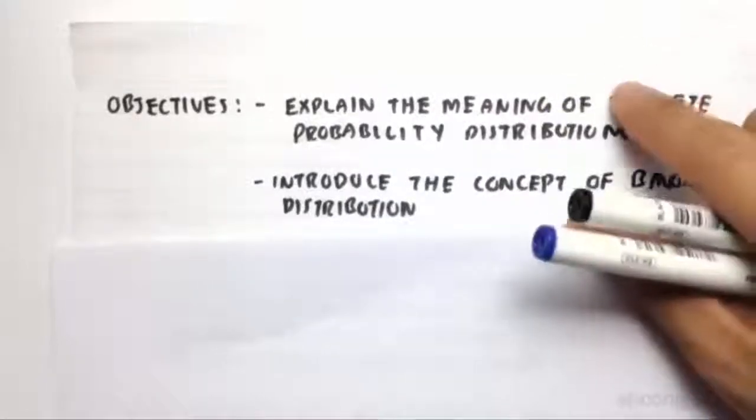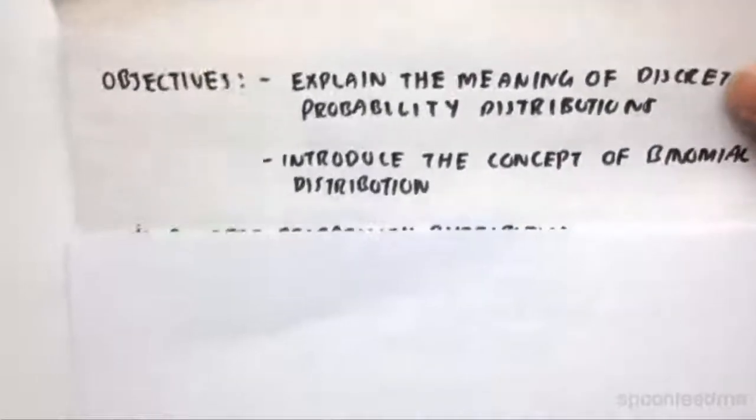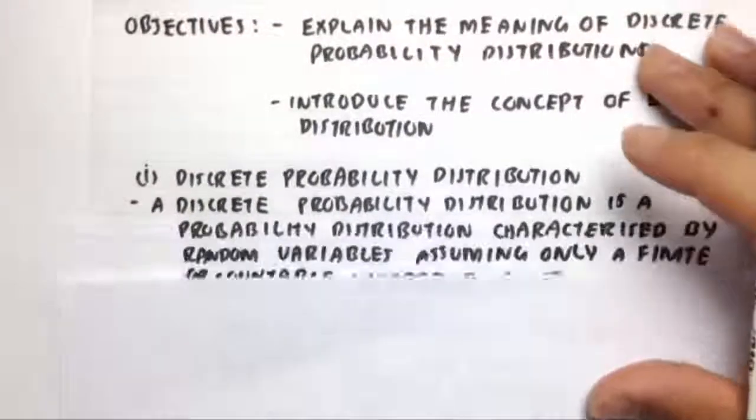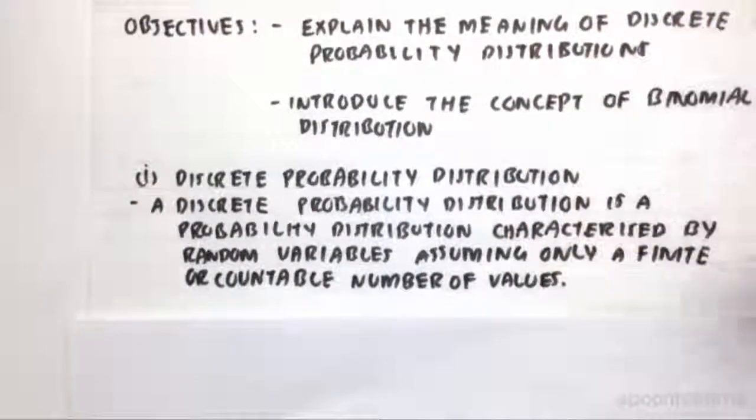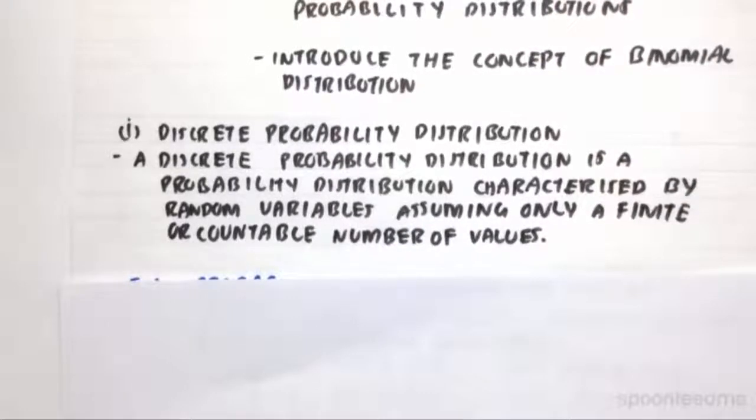The objective today is to first explain the meaning of discrete probability distributions, and then to introduce the concept of binomial distributions. A discrete probability distribution is a probability distribution characterized by random variables assuming only a finite or countable number of values within the sample space.